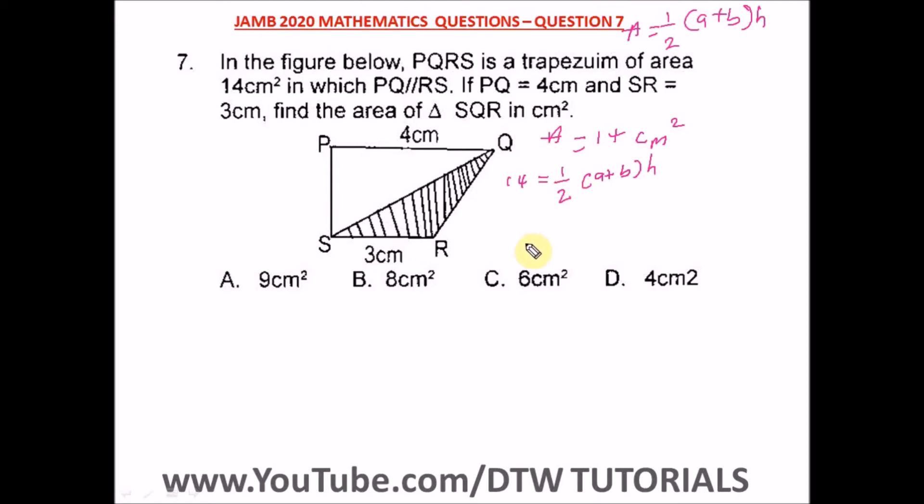the triangle. So we have 14 = 1/2(7)h. Let's cross multiply, so we